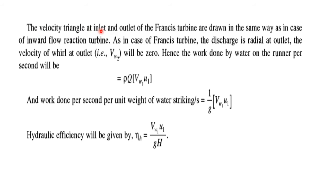The velocity triangle at the inlet and outlet of the Francis turbine is shown in the same way as in the case of inward flow reaction turbine. As in case of Francis turbine, the discharge is radial at outlet, the velocity of whirl at outlet Vw2 will be zero.